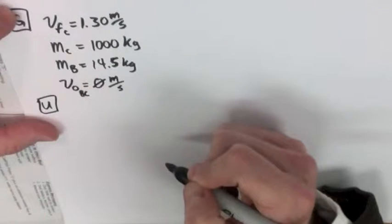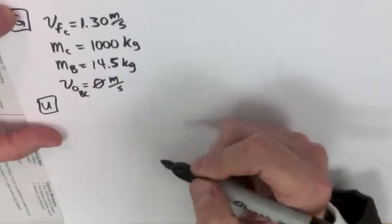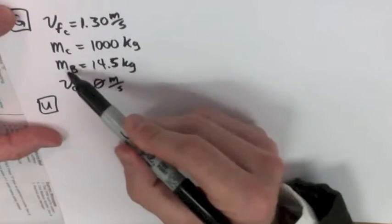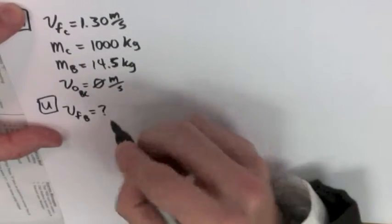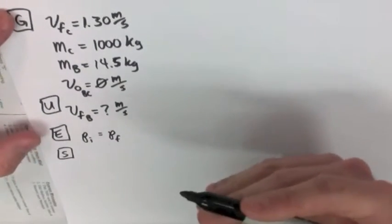All right, so what is unknown? They said, hey, what is the muzzle velocity? How fast is that ball coming out of the gun? So that's going to be the final velocity of the ball, VFB equals question mark. We're going to find it in meters per second. Continuing in the guess method, given's unknown equations. The one equation, this is an explosion, so momentum is conserved. We're going to do PI equals PF. We're going to expand our equation. That is the first S step.